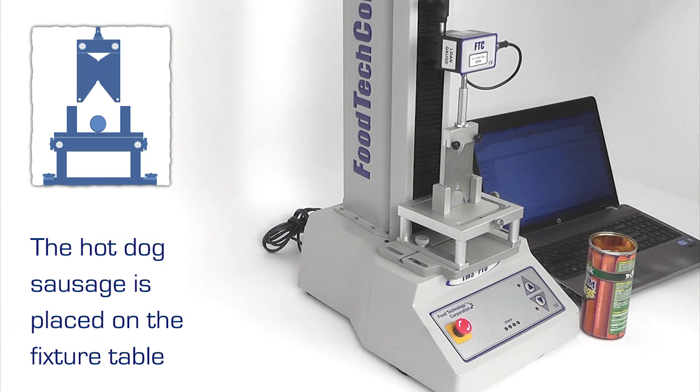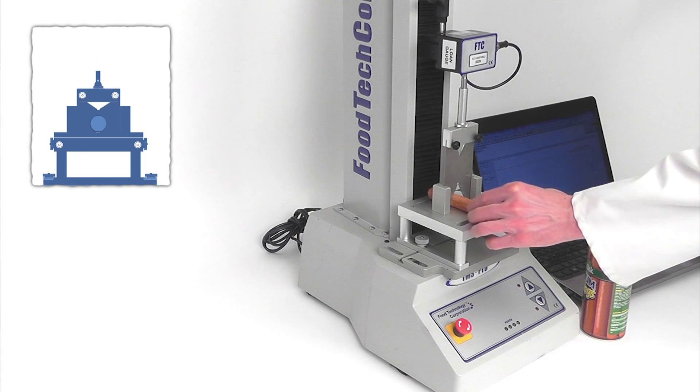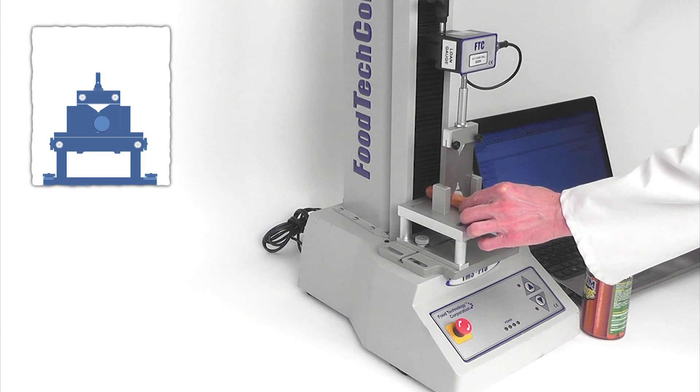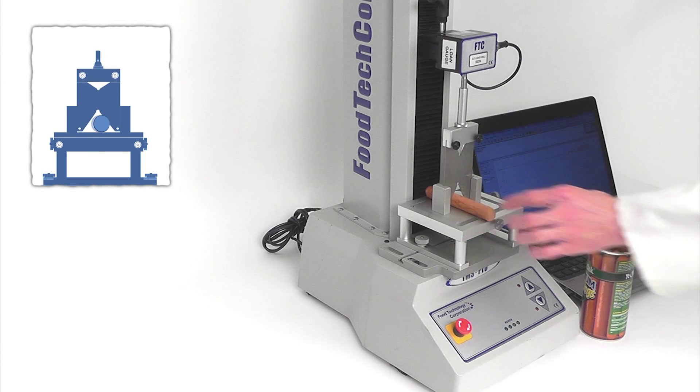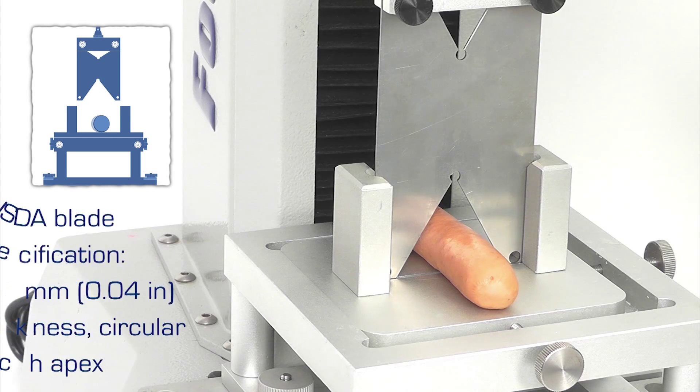The sample is placed on the fixture table, aligned with the blade notch. The test procedure will lower the crosshead and the blade to completely shear the hot dog. Real-time graphing clearly shows the behavior of the sample under test.